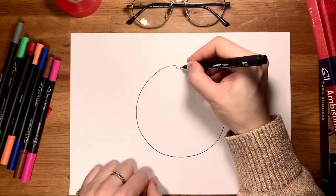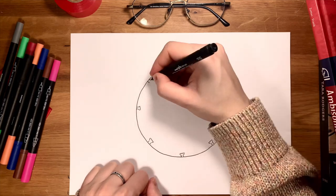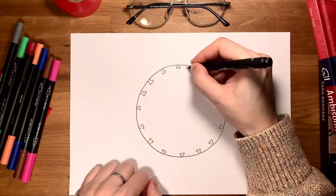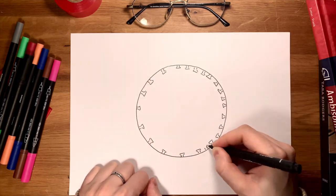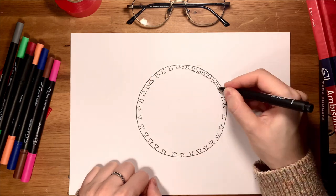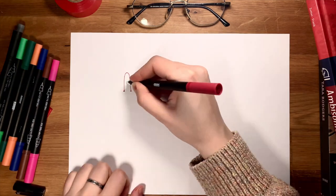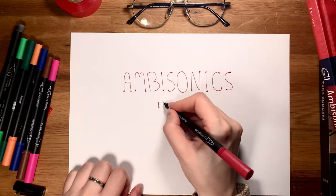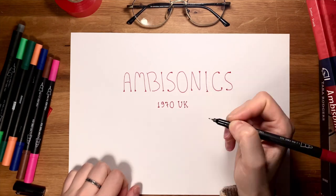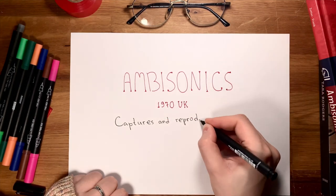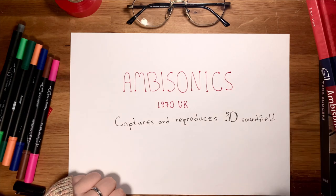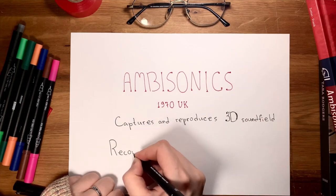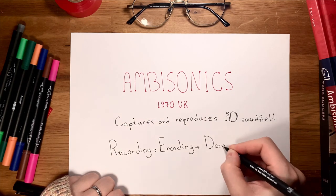As the number of speakers and audio channels was growing, there was a need for tools to handle them. Therefore, several spatialization techniques have been implemented. Among them was ambisonics, developed in the 1970s in the UK. Ambisonics is a technique for capturing and reproducing a three-dimensional sound field. We have three main steps when working with this technique: recording, encoding, and decoding.